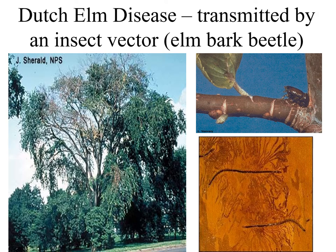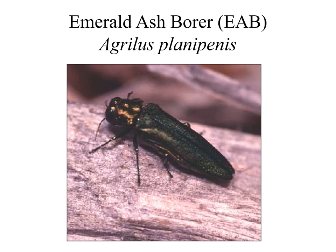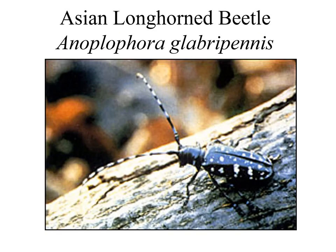Some plant pests travel on their own; some are carried by vectors or carriers. Elm yellows and Dutch elm disease are both examples of diseases often transmitted by insect vectors — for Dutch elm disease the vector is the elm bark beetle. Bacterial leaf scorch is a bacterium thought to be transmitted by plant hoppers and affects a wide variety of shade trees, first appearing in the lower branches and on older interior leaves. People are sometimes the vector of pests; emerald ash borer, for example, was introduced into Maryland on infected nursery stock. Emerald ash borer attacks ash trees and leaves a small D-shaped exit hole. Asian longhorn beetle is an exotic pest native to eastern China and Korea and is a very serious threat to our hardwood species — it has not yet been detected in Maryland.